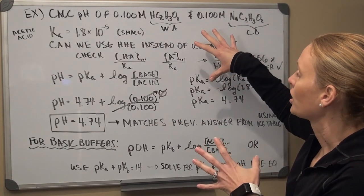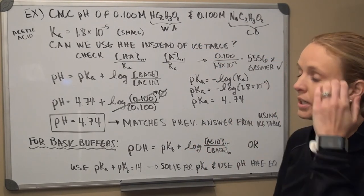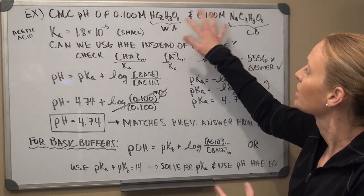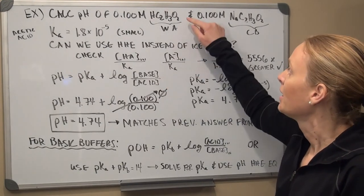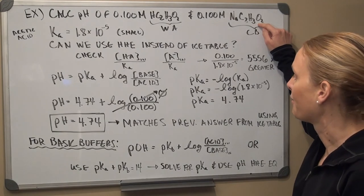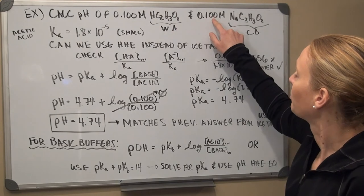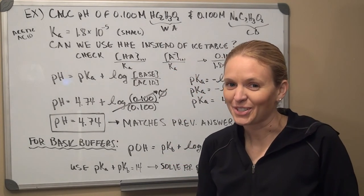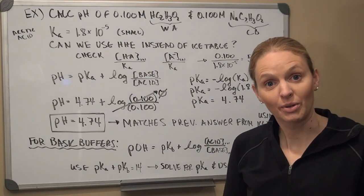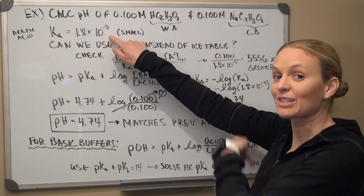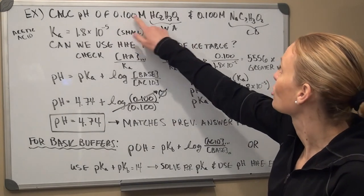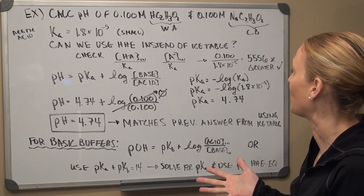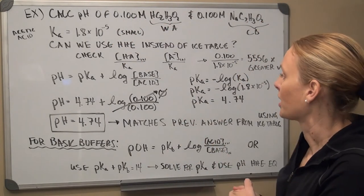So, same calculation, same problem as before. I have the Henderson-Hasselbalch equation. I identify the acid and conjugate base in the buffer. Both are 0.1 molar, so I plug in 0.1 and 0.1 for those concentrations. Remember, these are initial concentrations, not equilibrium concentrations. Since x is very small, it won't change these initial values significantly, so we don't need to account for it.